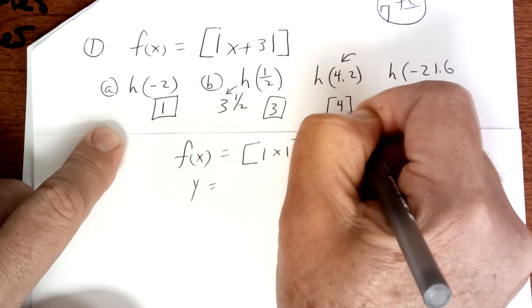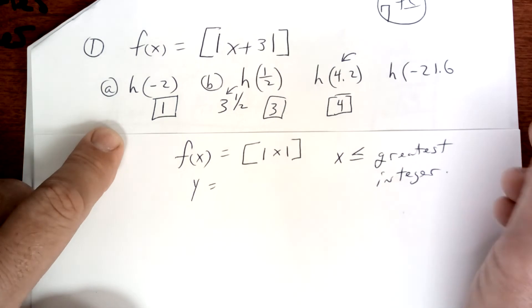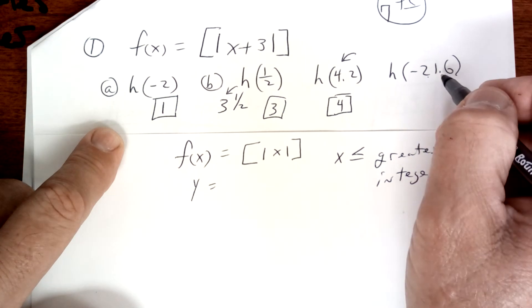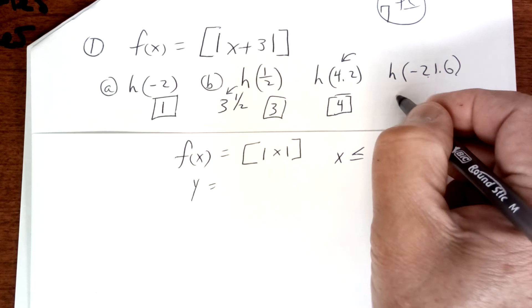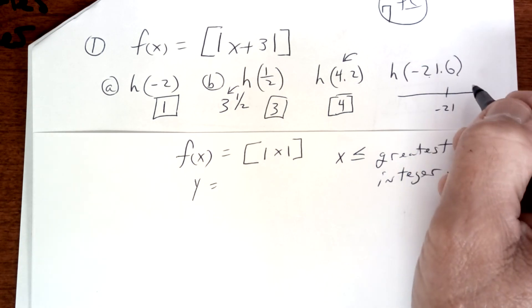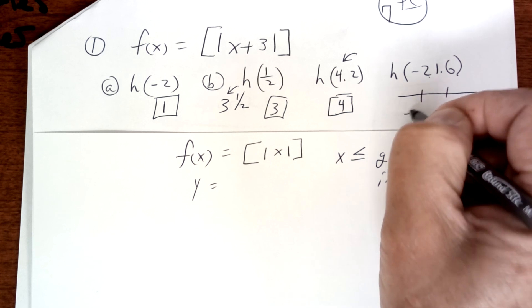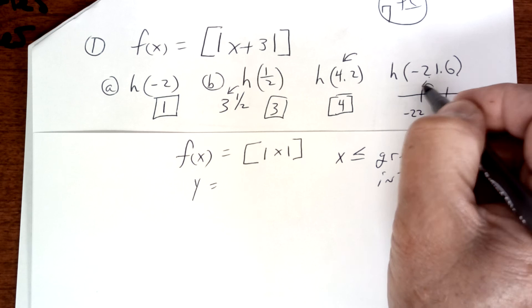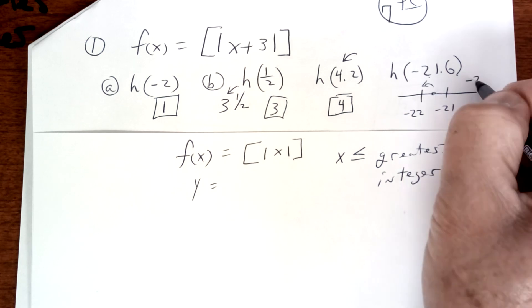This one right here is -21.6, a negative, so you've got to be careful with the negatives. So here's -21 and -21.6, -22 is here and you always round to the left, so you're going to say -22. Be careful with that. Remember, you always round to the left.